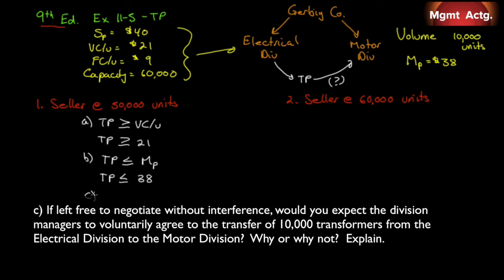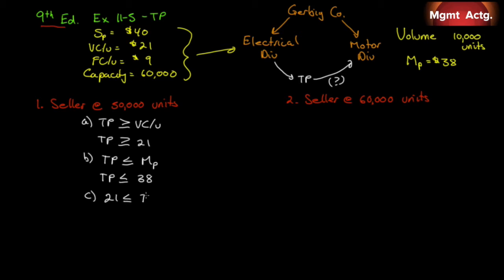Requirement 1C: if left free to negotiate without interference, would you expect the division managers to voluntarily agree to the transfer of 10,000 transformers? We have a transfer price that must be greater than or equal to $21 but less than or equal to $38 — a $17 range. Every dollar above $21 is in the electrical division's best interest; every dollar below $38 is in the motor division's best interest. So yes, I expect them, if left to their own devices, to agree on a transfer price.